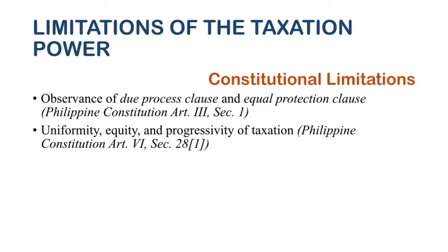Equity means taxation must observe the ability to pay — those who earn more should pay more, and those who earn less should pay less. This is observed in income taxation, where minimum wage earners are exempted and middle-income earners are subject to graduated tax rates such as 20, 25, and 30 percent. This is also related to progressivity — the more you earn, the more tax you pay, with rates progressing from lower to higher depending on the amount being taxed.